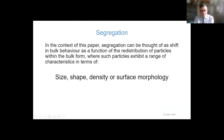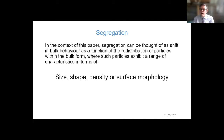For the purposes of this talk, we should think about segregation as being a shift in bulk behavior as a function of the redistribution of particles. This segregation can correlate to either a raw material with a nominally wide range of characteristics — segregation within a mono material — or a blended product where the homogeneity validated at the blender becomes compromised at the end of the production process. Throughout this paper I'll be talking about size distribution, as that is the most commonly accepted metric when discussing segregation.